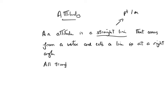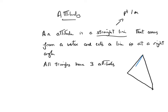All triangles have three altitudes, and I'm just about to show you that. So there is a triangle. Each triangle has got three vertices — a vertex is just the corner of the triangle, and the plural is vertices. I'm going to draw the altitude from one vertex: it comes from the vertex and cuts the opposite line at a right angle. So that's altitude one.